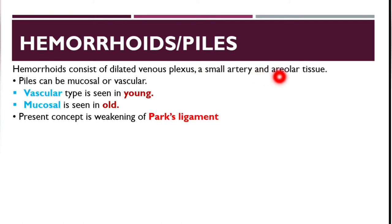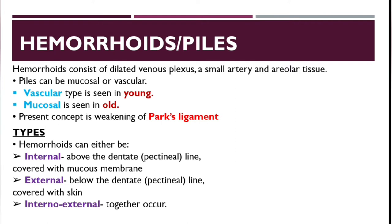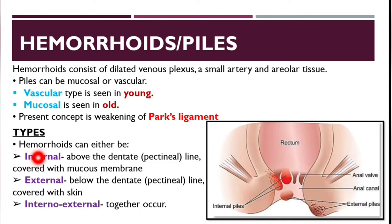Hemorrhoids consist of dilated venous plexus, a small artery, and areolar tissue. They can be vascular or mucosal: the vascular type is usually found in young people and the mucosal type in older people. The present concept suggests hemorrhoids are mainly due to weakening of the Parks ligament, at the lower end of the external anal sphincter. Internal hemorrhoids are above the dentate (pectineal) line and covered with mucosa; external hemorrhoids are below the dentate line and covered with skin.